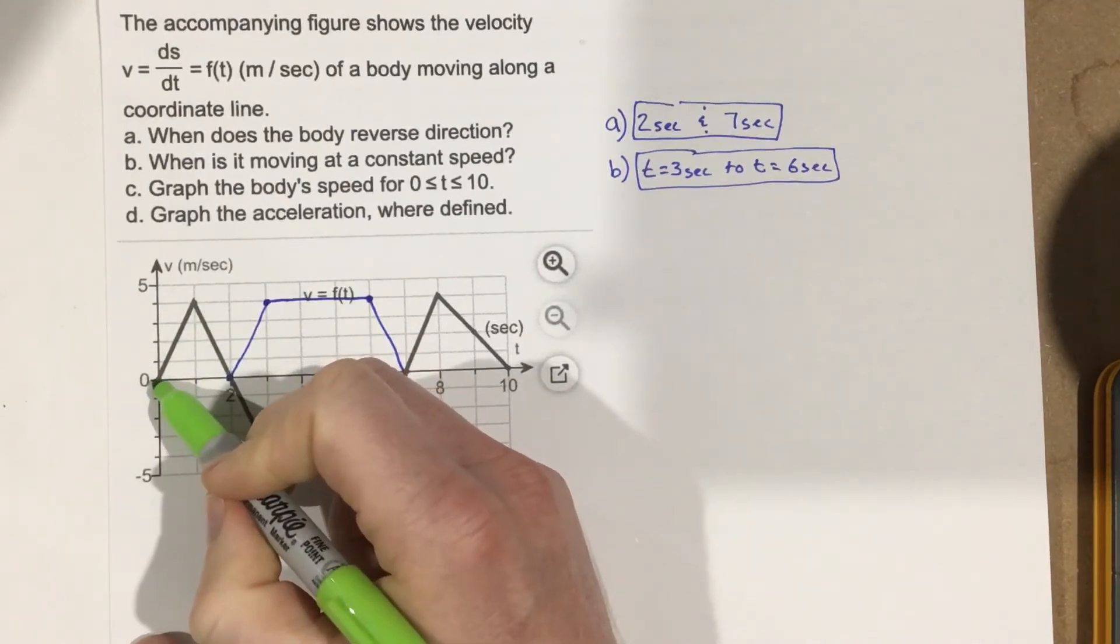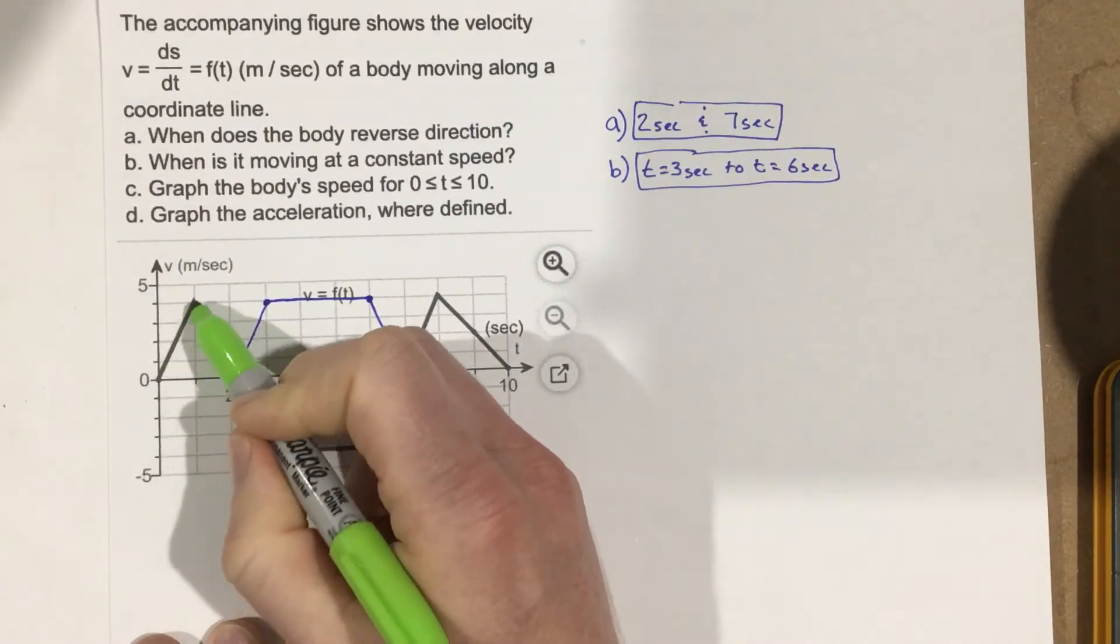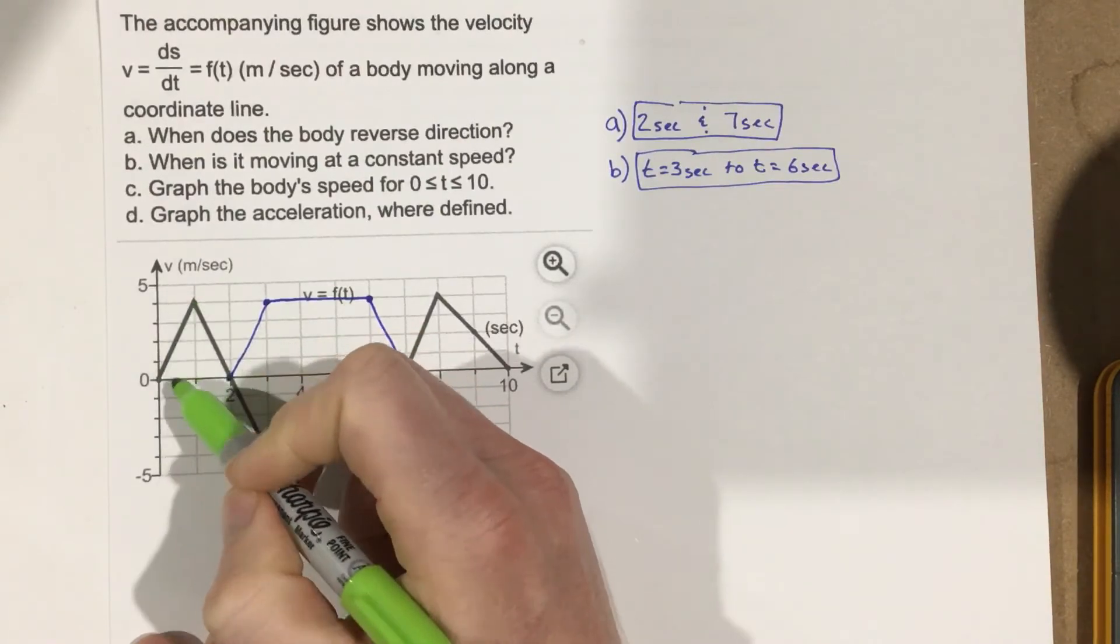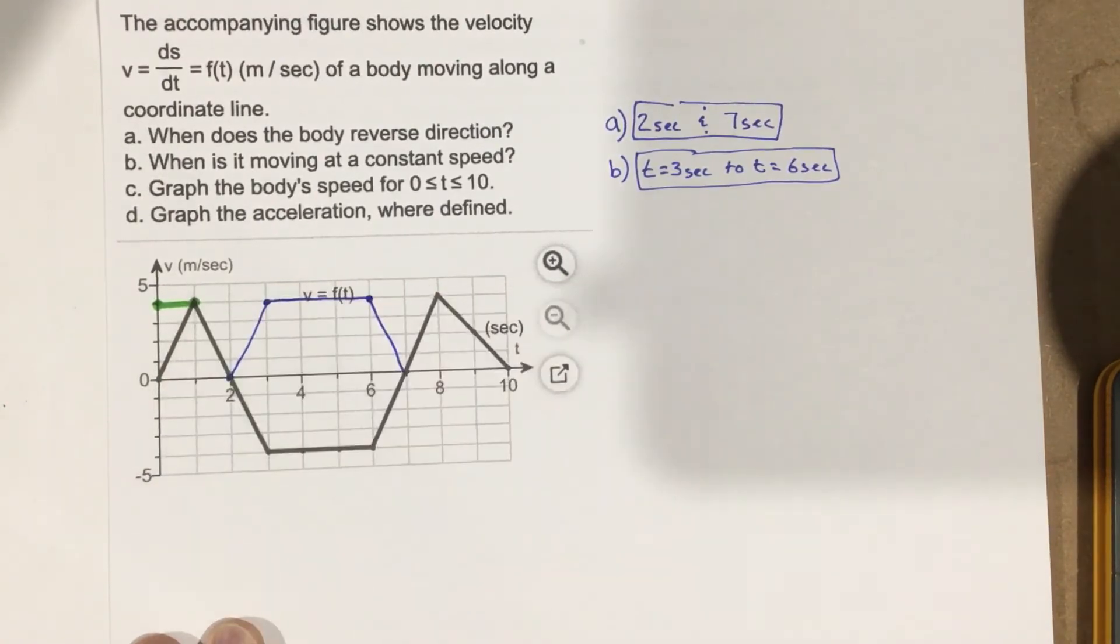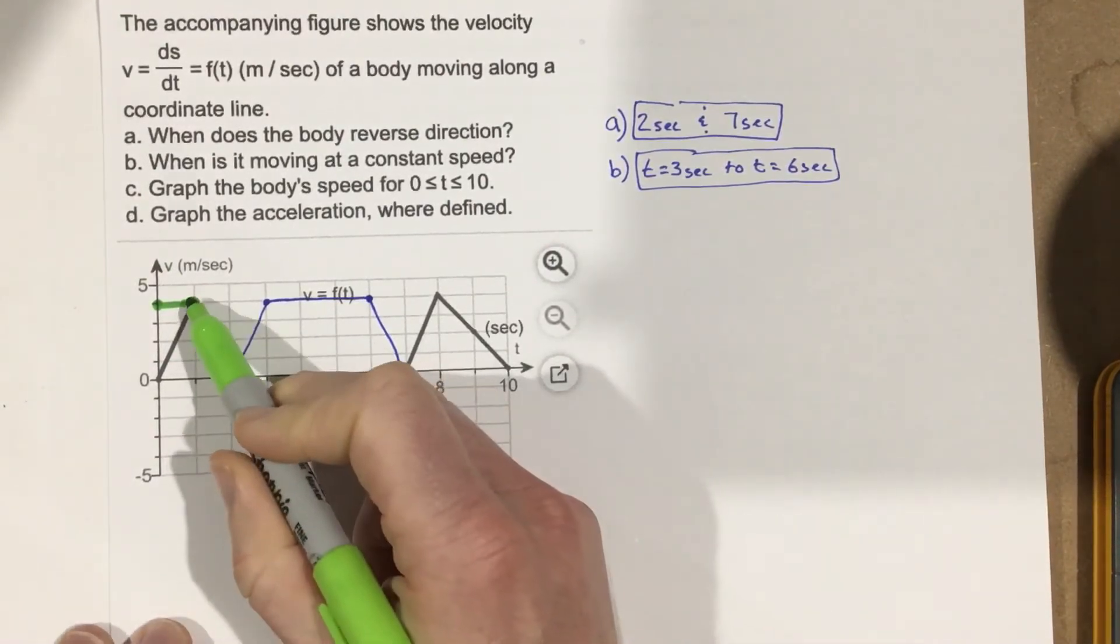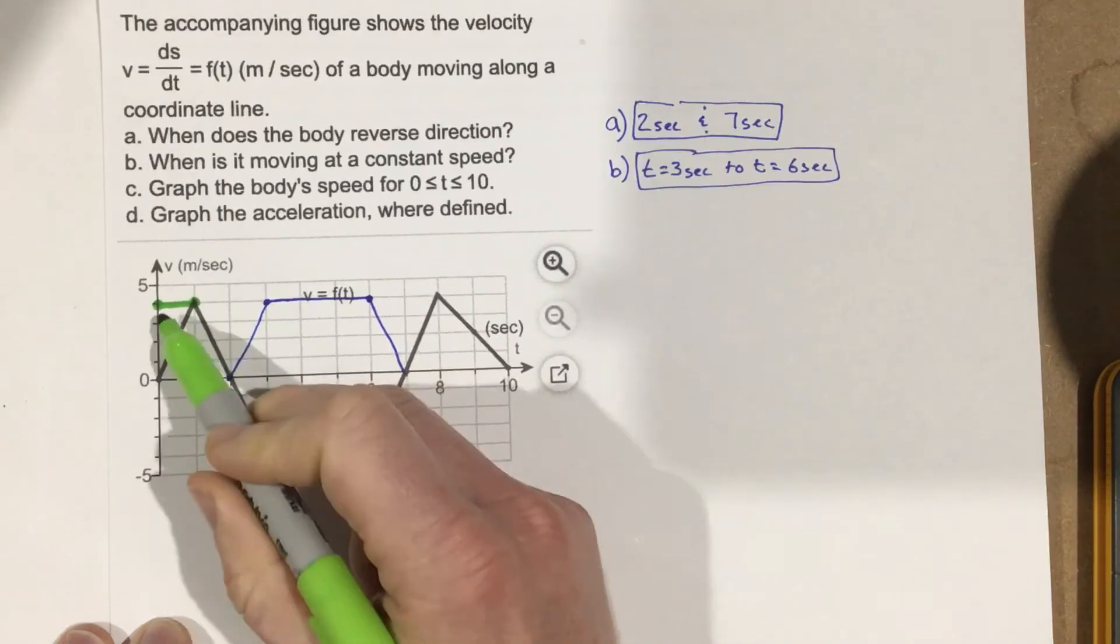So if I'm going from zero for speed to four for speed in one second, four minus zero over one, my acceleration is four. So I'm going to go ahead and say that my acceleration would look like this here, and you would have probably an open dot here on this side. I kind of closed that dot, but there's your acceleration there for that part.